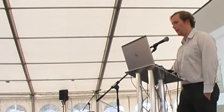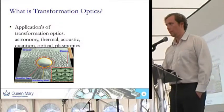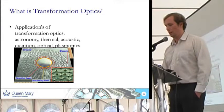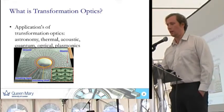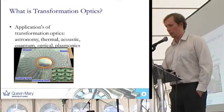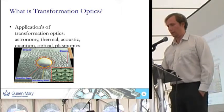So what is transformation optics? I've mentioned astronomy. And you have thermal cloaking. One of the applications is cloaking — thermal cloaking for sound waves, and cloaking for matter, where you use the equations to cloak electrons going around a hidden insulating shell. There's a picture of one there.